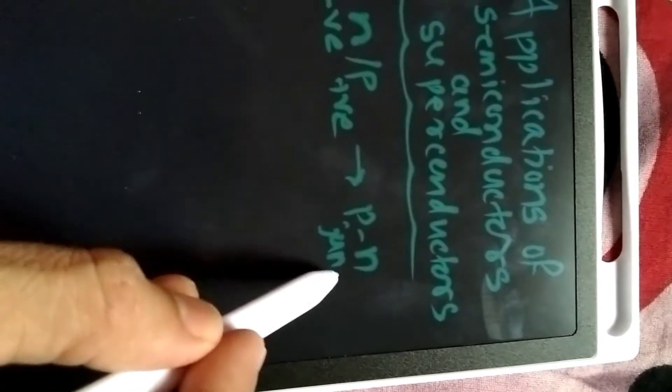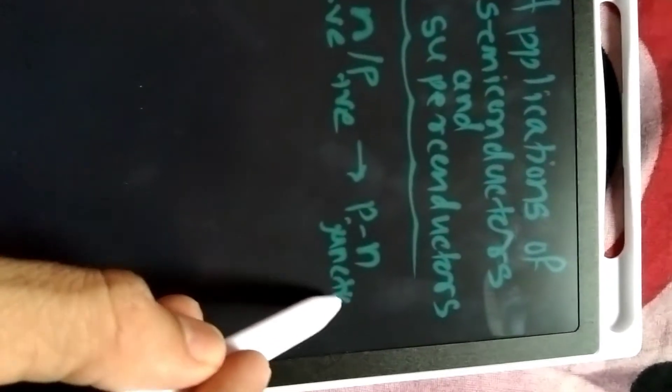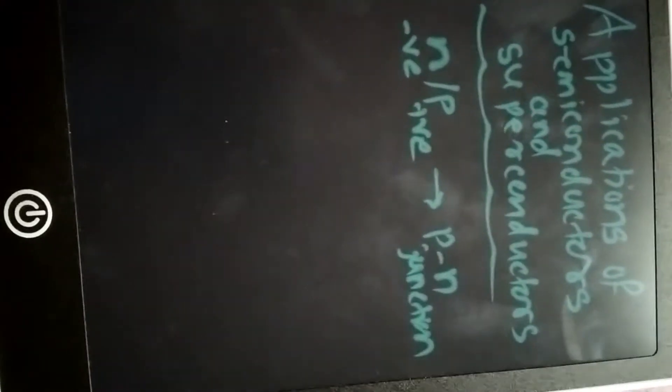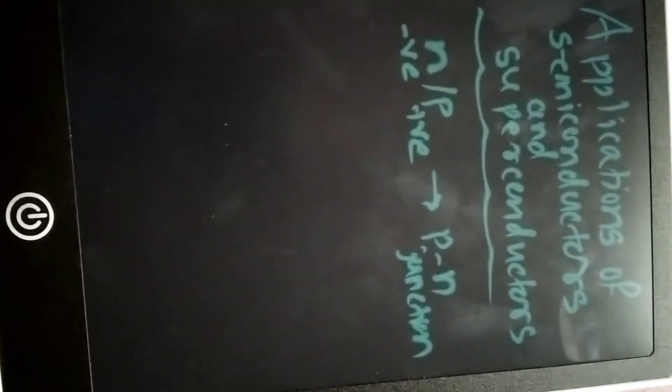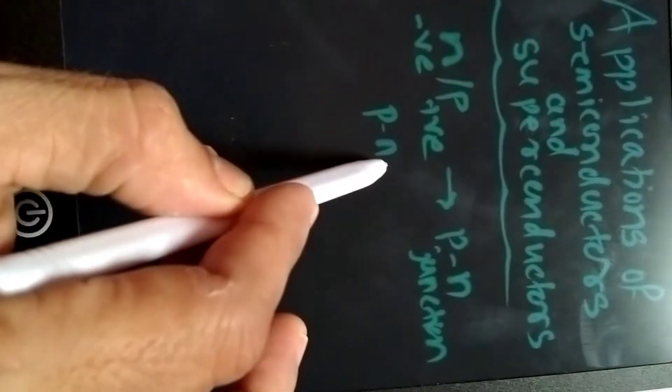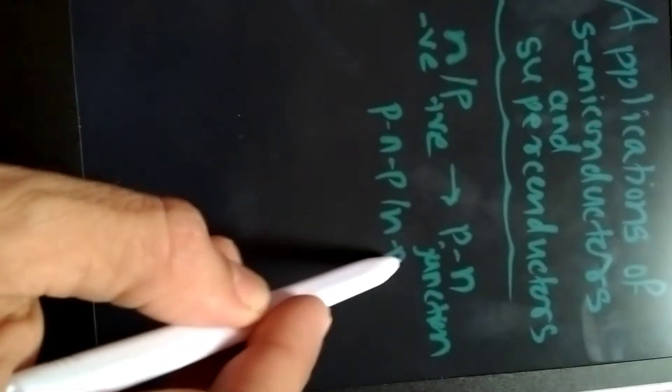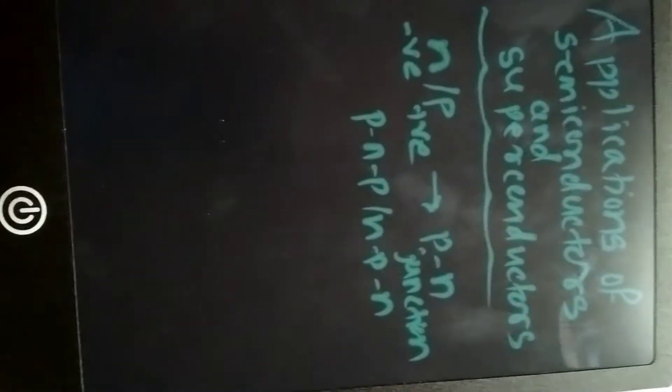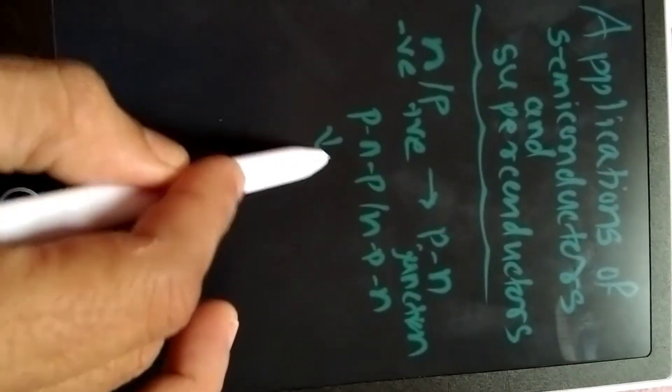PN junctions form junction diodes, which are used in electronic diodes, light emitting diodes, and general conducting diodes. When they form junctions as PNP and NPN, they are used in transistors and triodes.